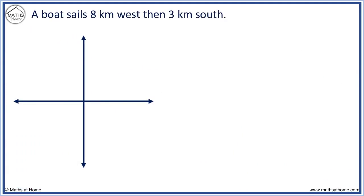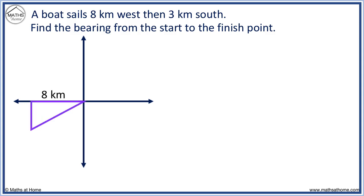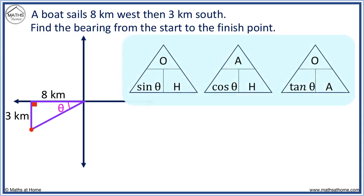A boat sails 8 kilometers west then 3 kilometers south. Find the bearing from the start to the finish point. We travel 8 west and 3 south. 3 is O and 8 is A, so again we use this triangle containing O and A.